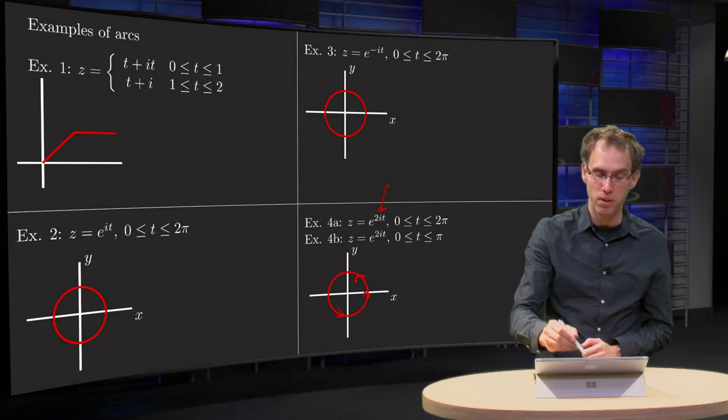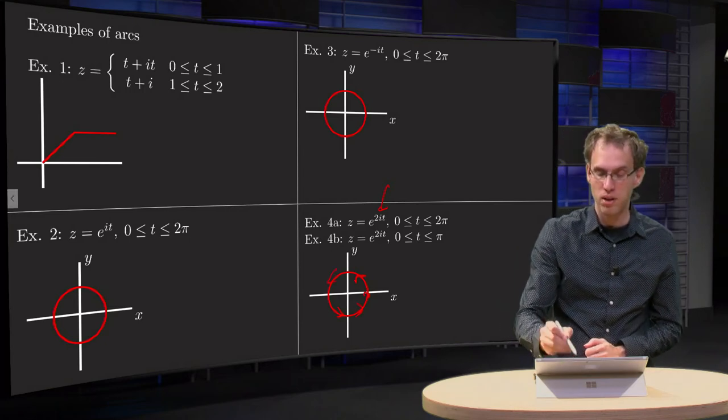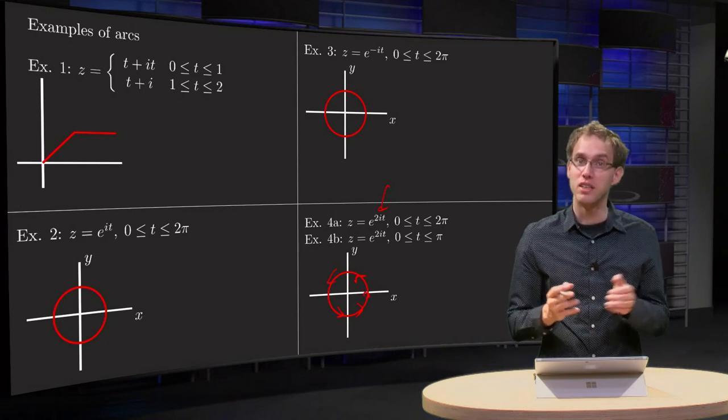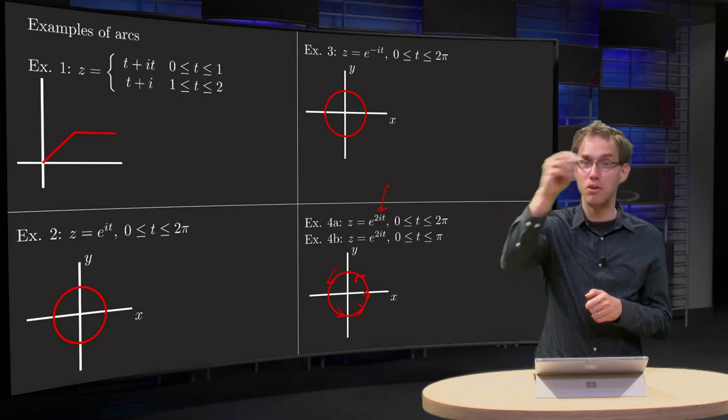And because t runs into 2π, we make another round. So this curve, by the way, as it is, is not simple anymore because we are intersecting ourselves. We are going around twice.